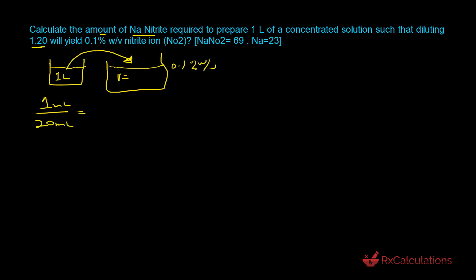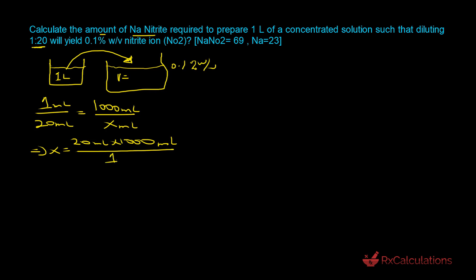We convert the one liter to 1000 milliliters. Setting up the proportion: if one milliliter goes into 20 milliliters, then 1000 milliliters gives us x. Solving for x: x = 20 milliliters × 1000 milliliters ÷ 1 milliliter = 20,000 milliliters. So the volume of the diluted solution is 20,000 milliliters.